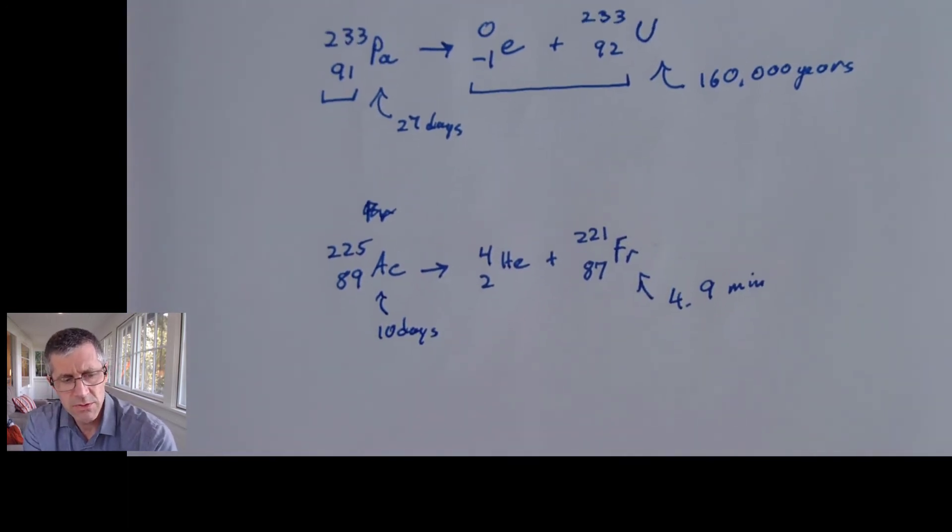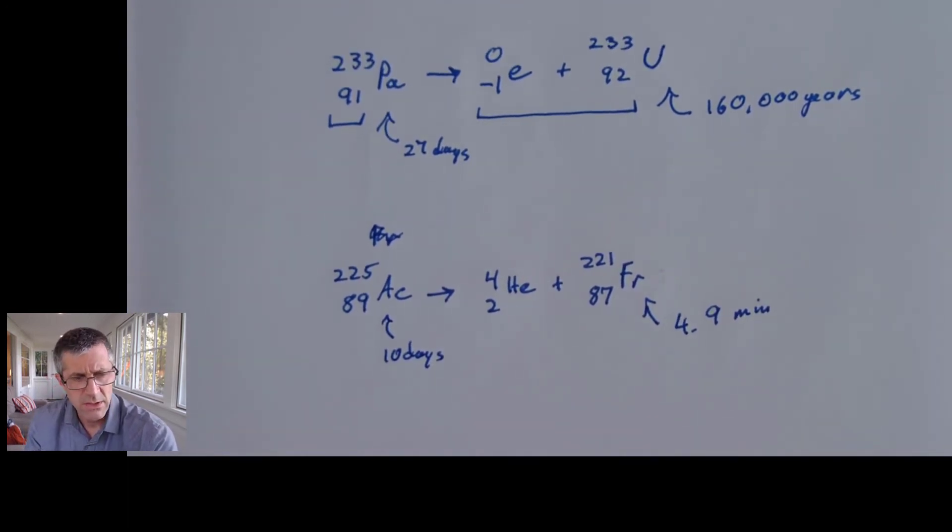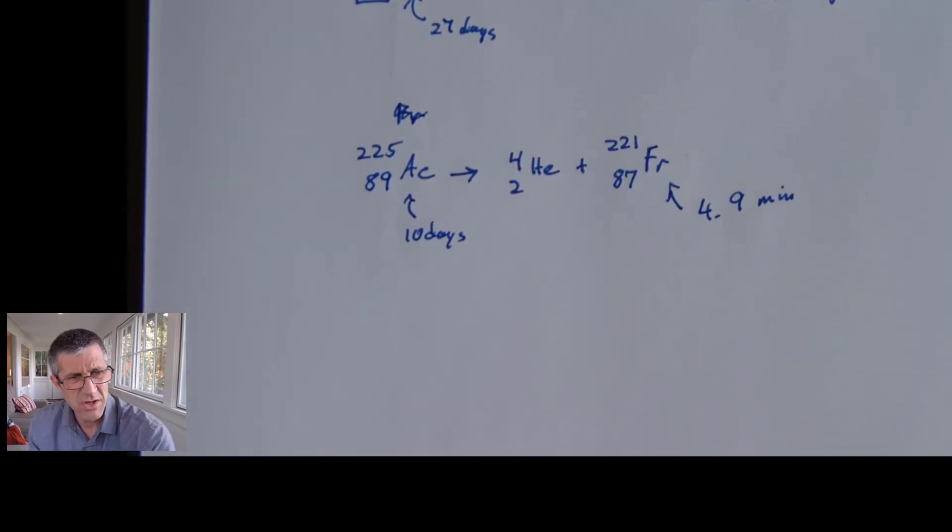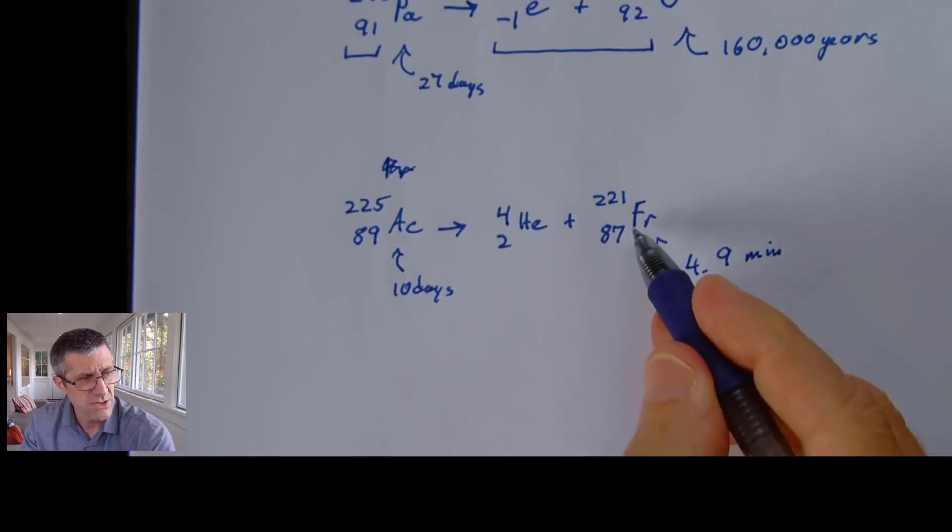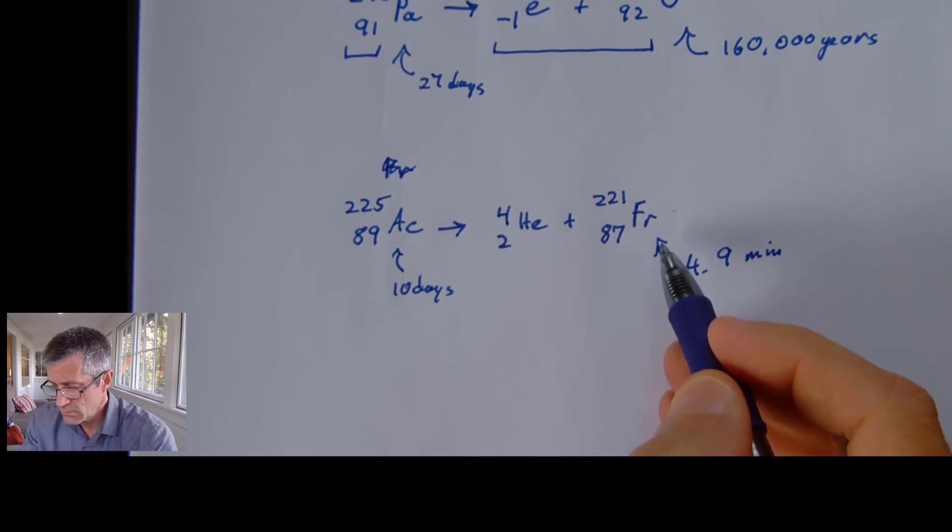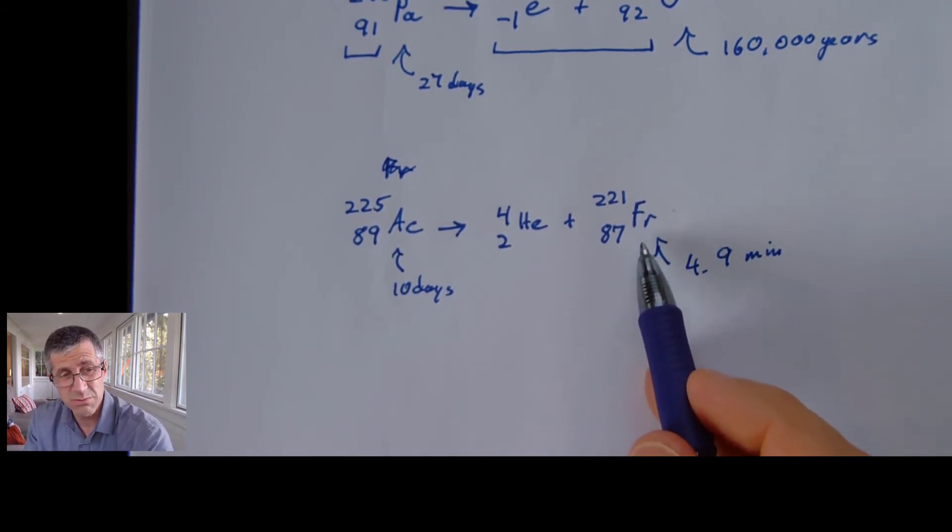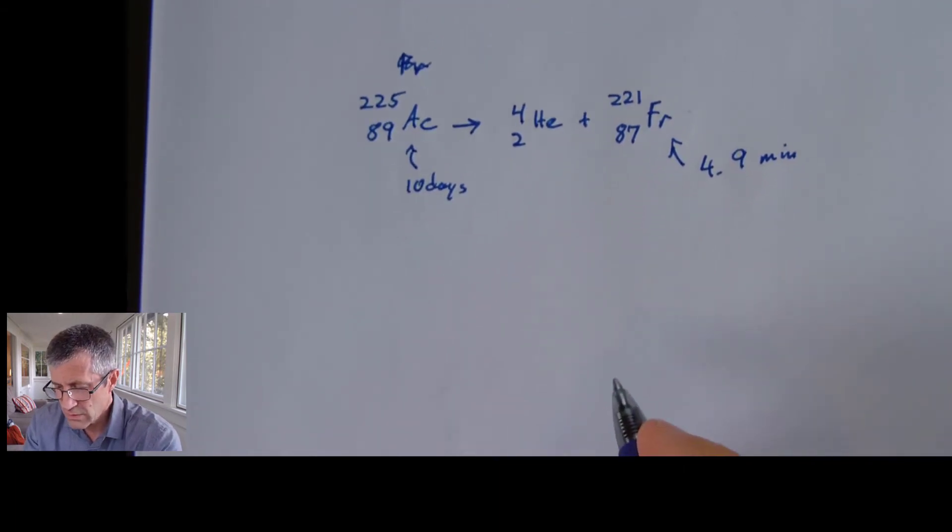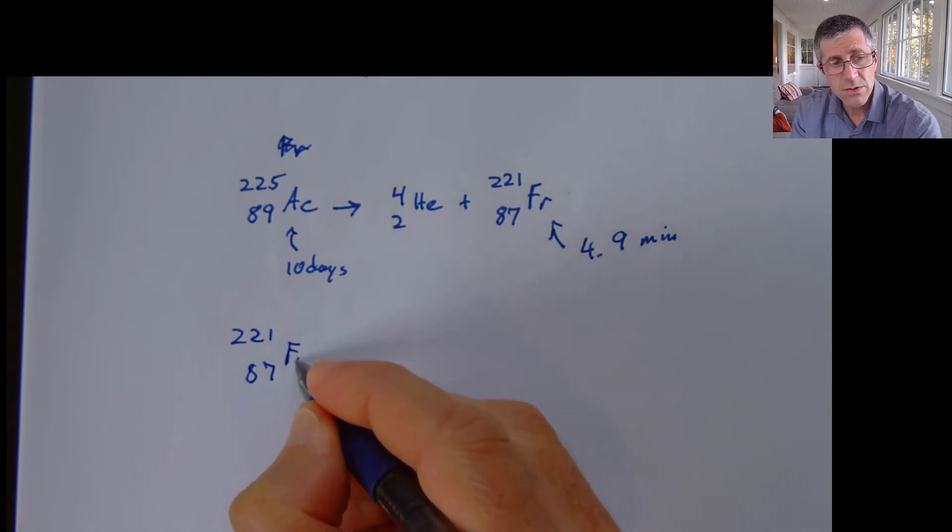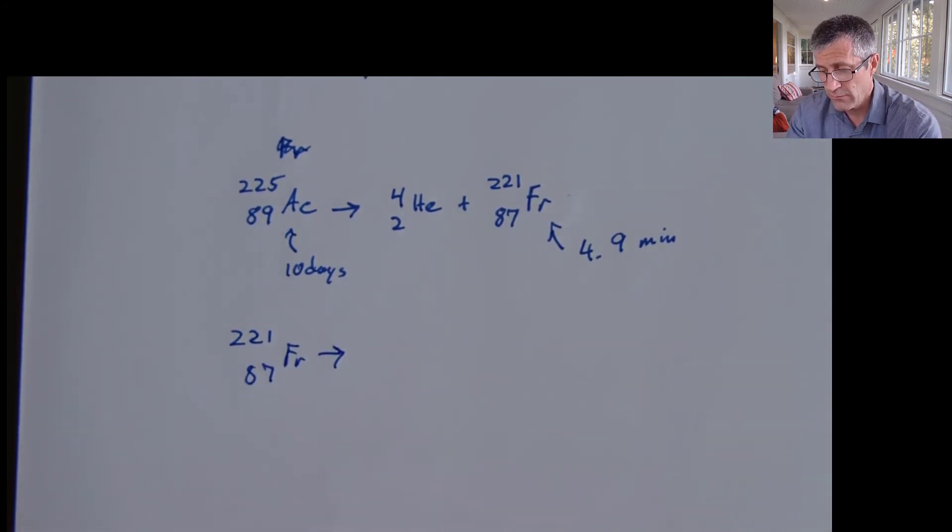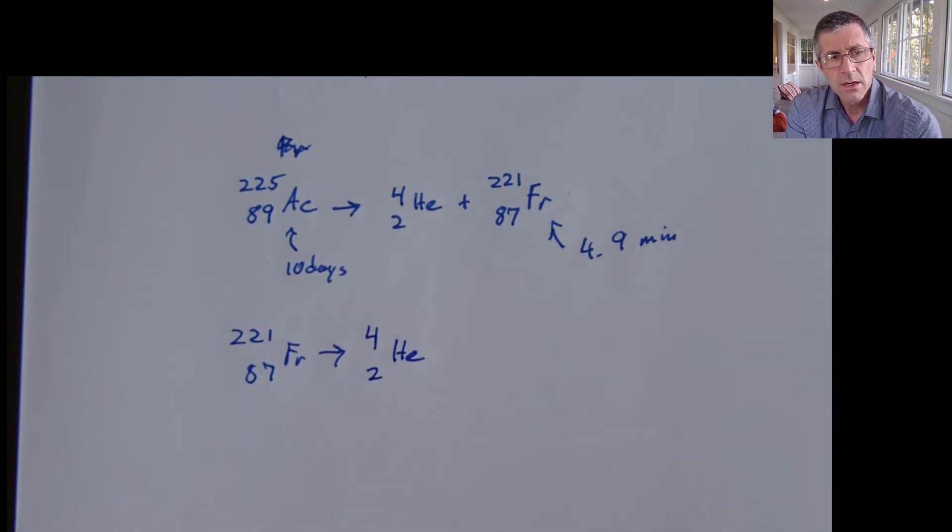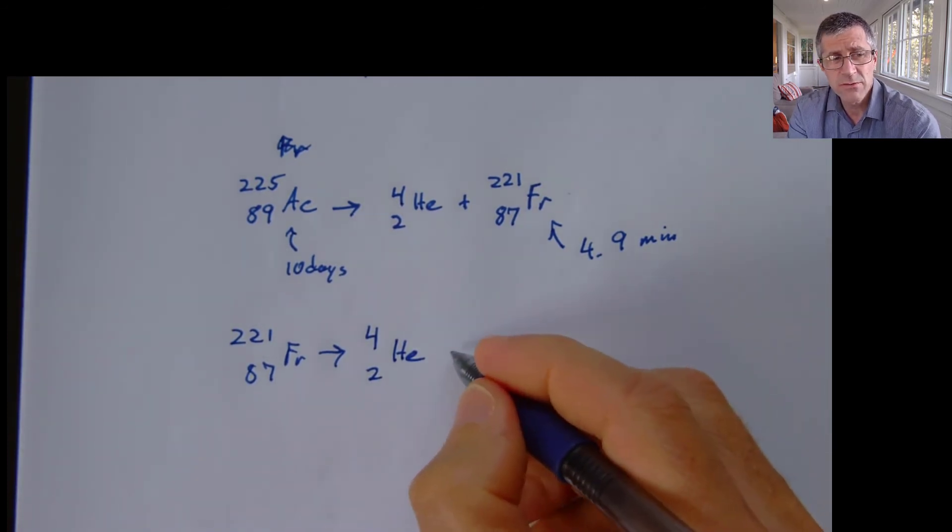So a couple of things. Hopefully you're getting the idea of how to write these out. Let me do one more example. Let's see what this turns into. So the question is, this is going to go through alpha decay. And then what's left over? So after 4.9 minutes, half of this is going to disappear. So I'm going to start with this. And it's going to go through an alpha decay. So it means I'm going to write an alpha particle here. So I like to write this as a helium nucleus.